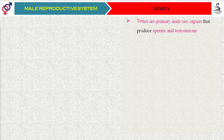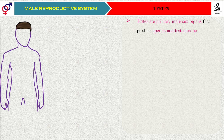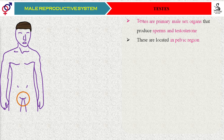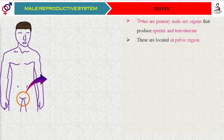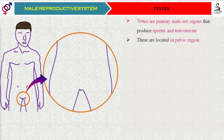But where are the testes located, students? Here you are observing the male — in this individual you are observing the presence of the pelvic region. In this region there are two testes in a skin pouch, and that skin pouch is called the scrotum. We will magnify this area and then we will see how the testes are situated in the scrotum.